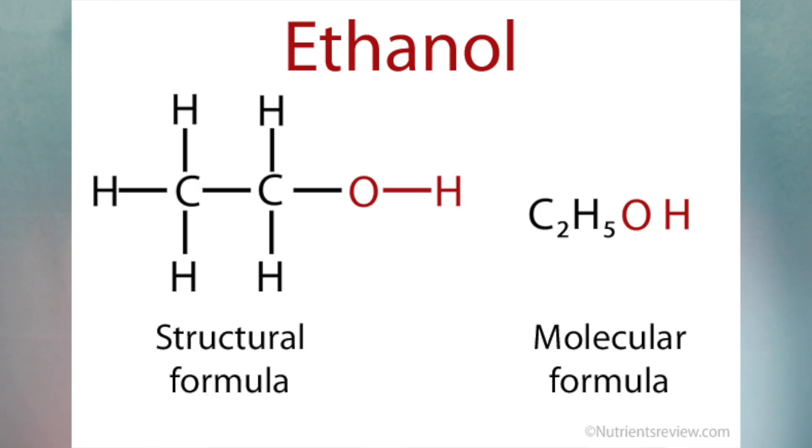Chemists assign different functional groups to different parts of a molecule so that we can know how that particular region will interact with other compounds. The functional group 'alcohol' means that there's a hydroxyl group attached to a carbon, and a hydroxyl group is an oxygen bound to a hydrogen. Alcohols can form hydrogen bonds. The reason ethanol is so different from cetearyl alcohol is that ethanol is a very small molecule — very small, very volatile, and very water-soluble — it forms hydrogen bonds readily and evaporates very readily.